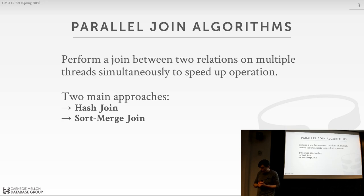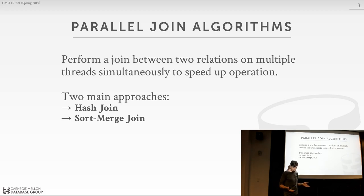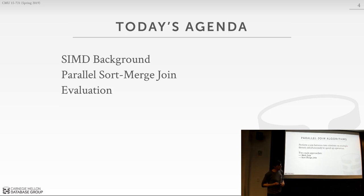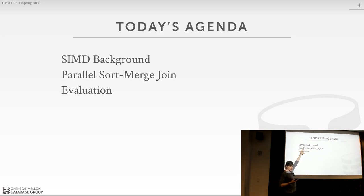Our focus today is on parallel join algorithms. The big distinction between the intro course and this class is that in the intro course we never talked about how we actually execute the join in terms of low-level operations on the CPUs or where the data is actually being stored — it was all about reading and writing blocks from disk. The two main approaches you care about in a fast database system are hash join and sort-merge join. We don't really care about nested loop joins; we need them for some workloads, but they're primarily for edge cases.